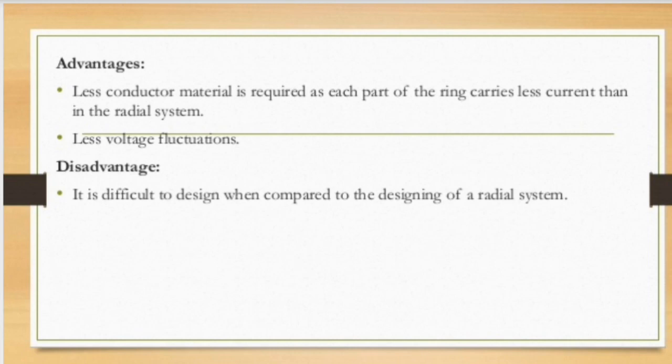The advantages of the ring main system include that less conductor material is required, as each part of the ring carries less current than in the radial distribution system. In a radial system, conductors at the start are larger because they carry the total load current, but in a ring system the current is small throughout. There are also fewer voltage fluctuations in the ring main system. The disadvantage is that the ring main system is more difficult to design compared to the radial distribution system.